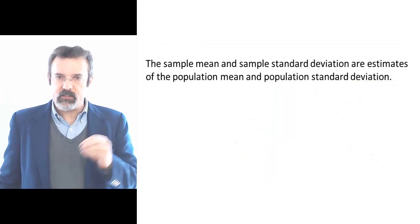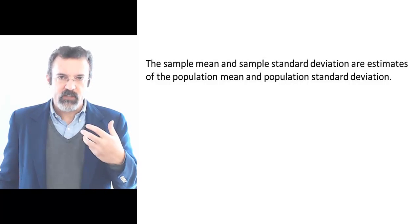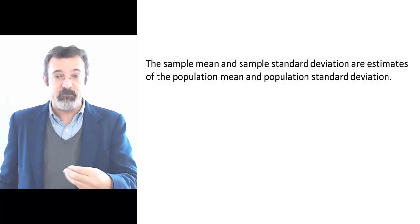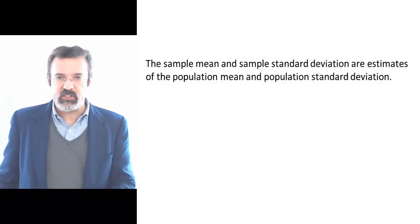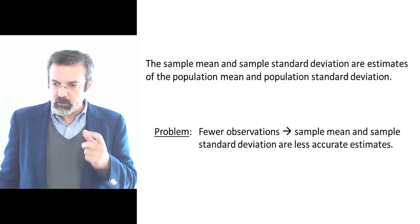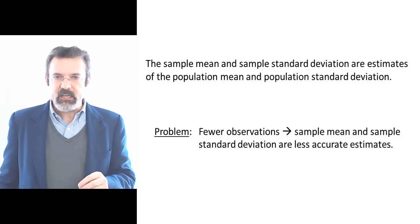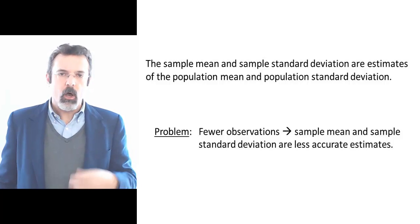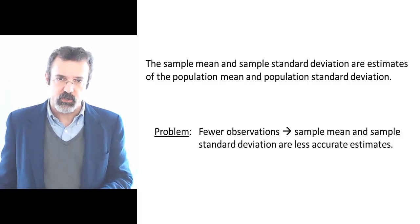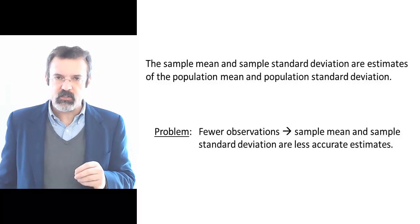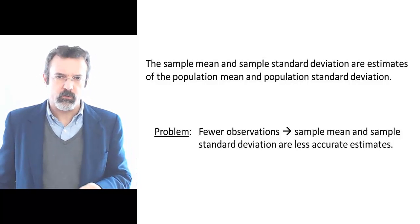What's important to remember is that the sample mean and the sample standard deviation that we calculated are themselves estimates of measures that we would like to have but don't — that is, the population mean and the population standard deviation. When we have very few observations, the sample mean and sample standard deviation are less accurate estimates of the population parameters. The less accurate these estimates are, the more uncertain we are as to the correct shape of the normal distribution.